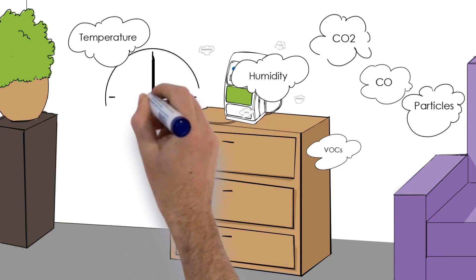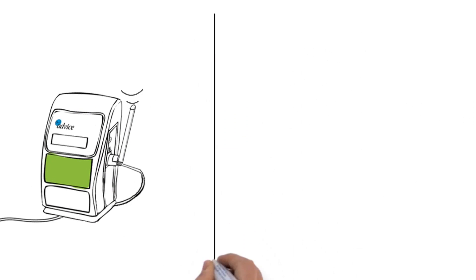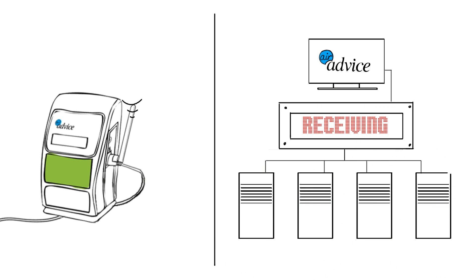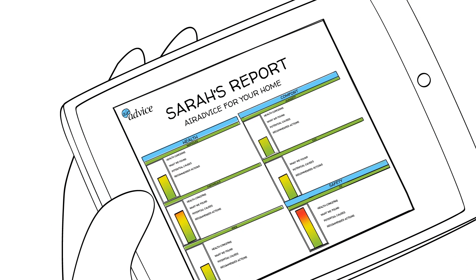While I'm working, the monitor takes about 30 minutes to collect all of its data, which it then sends to the AirAdvice servers using its built-in cellular modem. AirAdvice then analyzes the data, creates a report, and emails it to me while I'm still there at the home.